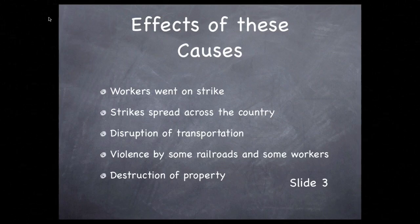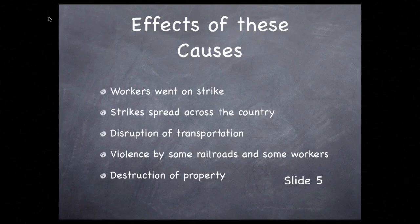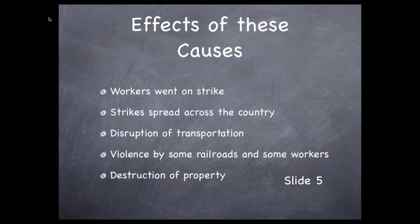When we use the term effects, we're referring to the effects of our cause list. Let's look again at the causes of the 1877 strike: there was a partial collapse of the economy, 12-hour work days were required, dangerous working conditions, and pay was cut by 10%. Now let's look again at the effects: workers went on strike, strikes spread across the country, transportation was disrupted, and there was violence by some of the railroad companies and some workers, and property was also destroyed.